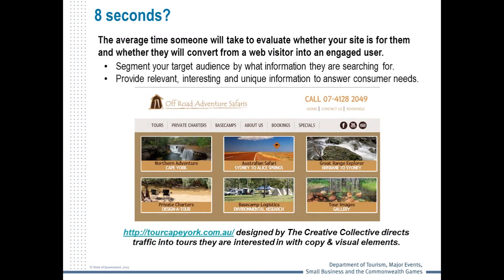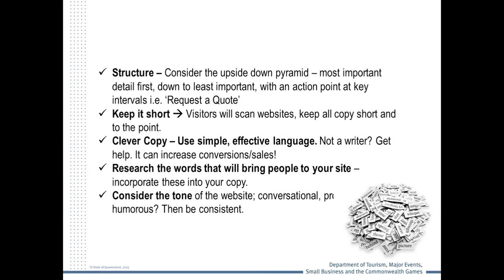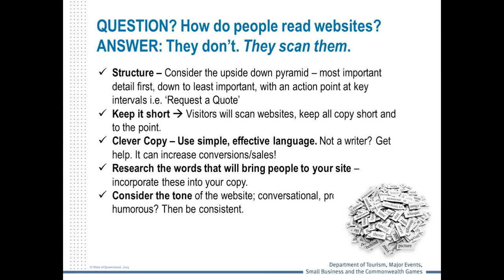Ever heard of the eight-second rule? If you've ever been involved in dating, you know it's true — and it's true for websites too. The average time someone will take to evaluate a website and decide whether it's going to be good for them. You can use Google Analytics to help understand whether people decide it's good for them. Understand your target audience and provide relevant, interesting information for them. Looking at a sample website for off-road safaris, you can easily find Cape York in just seconds — it's right there, easy to find, easy to understand, sending the user directly where they're going.